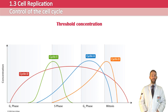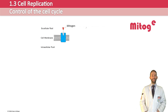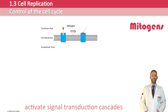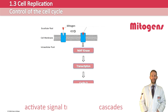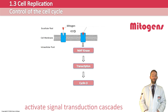Extracellular proteins called mitogens also play a crucial role in activating cell division and cell growth. These mitogens bind to cell surface membrane receptors and activate signal transduction cascades inside the cell, which activate transcription factors and produce cyclin D. It's just a step-by-step cascade of metabolic reactions — one thing activates another, which activates another, which causes a specific gene to be read and turned into a particular cyclin during protein synthesis.